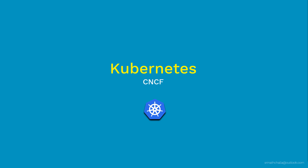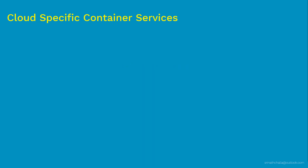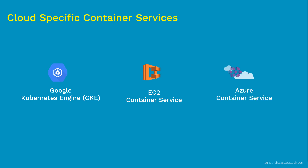Next, there are some cloud-based container services. There are primarily three cloud providers that occupy more than 80 percent of the market share: Google Cloud, Microsoft Azure, and Amazon Web Services. Each of these cloud providers offers services to manage containers at large scale. First, we have Google Kubernetes Engine — since Google has been using containers for more than a decade, they know how to manage them at scale. Next is Amazon's Elastic Container Service, and then Azure Container Services — although they have their own way of managing containers, they also provide an option for using Kubernetes on their platforms.